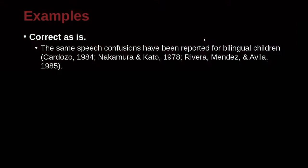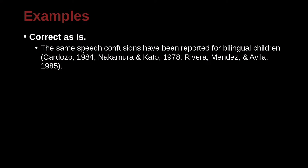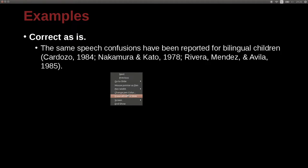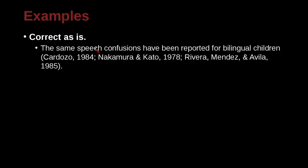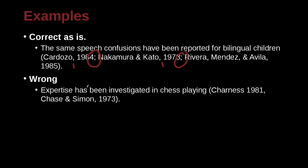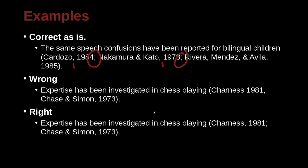The same speech confusions have been reported for bilingual children — Cardozo. Here we have the citations for the APA style, and you separate them with the semicolon. There is a comma after the name but before the date. For expertise investigated in chess playing, in APA style you need the comma, and then the colon in between the different citations.